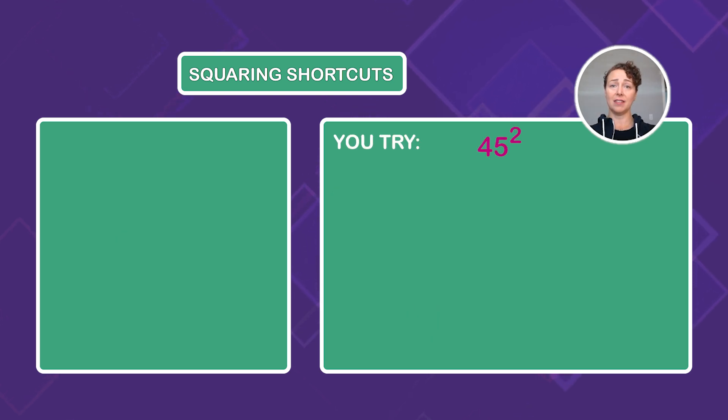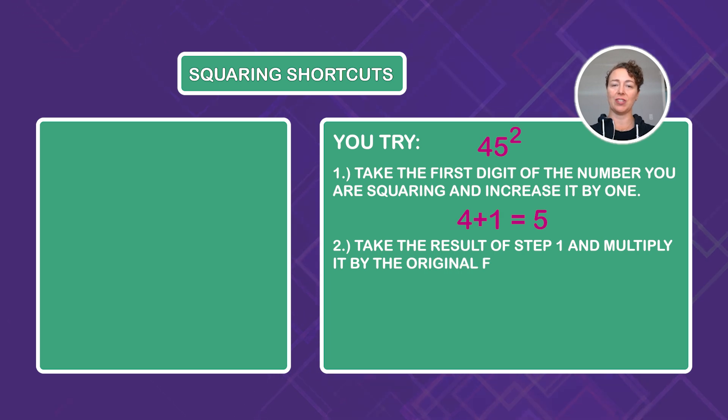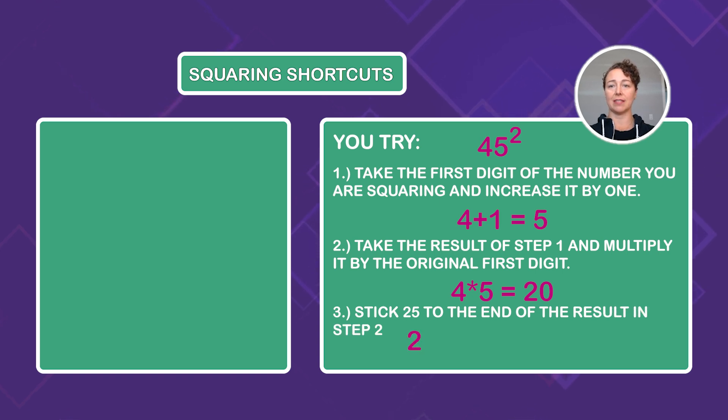Now it's your turn. 45 squared. Pause the video and see if you can work out 45 squared. Remember to use the trick. All right. Welcome back. You should have 2025. Did you get it? Take the first digit of the number you were squaring and increase it by one. In this case, four plus one is going to give us five. Second step, take the result of step one and multiply it by the original first digit. So that's four times five, giving us 20. Now we just need to tack 25 onto 20, giving us 2025. If you got it, nicely done. If not, go back and check your arithmetic steps. Finally, for our last mental math trick, we are going to talk about percent shortcuts.